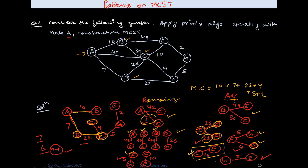Now I compare the remaining set and adjacent set. The edges have weights 42, 30, 49, 26, 5, and 10. The minimum is 5, so I consider F to G as the new edge in the spanning tree because it has minimum weight 5.